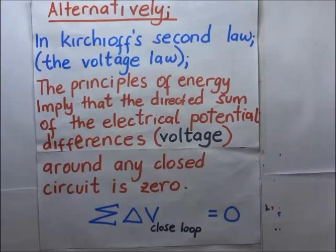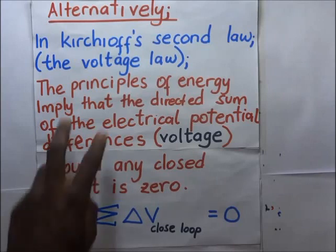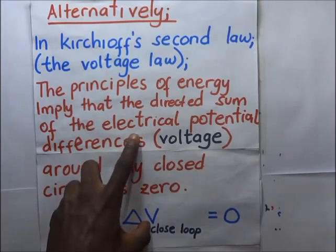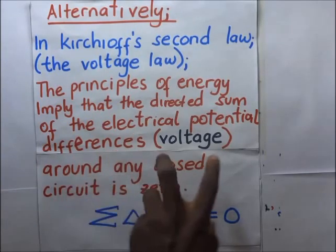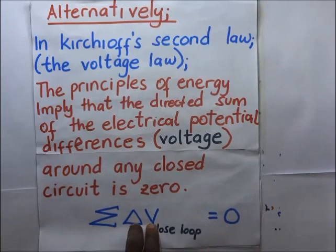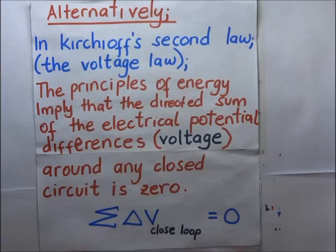Alternatively, the principle of conservation of energy states that energy is neither created nor destroyed but can be converted from one form to another. In this alternative way of looking at it, the principles of energy are implied. The directed sum of the electrical potential differences — the voltages — in any closed loop circuit is always equal to zero. So the algebraic sum of all the total voltages in a closed circuit should be equal to zero.